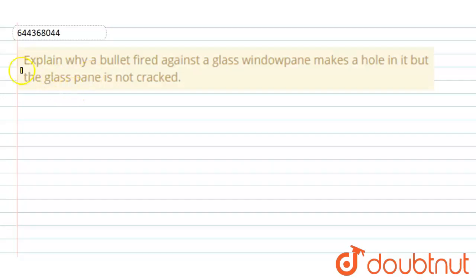So here is the question: explain why a bullet fired against a glass window pane makes a hole in it but the glass pane is not cracked.